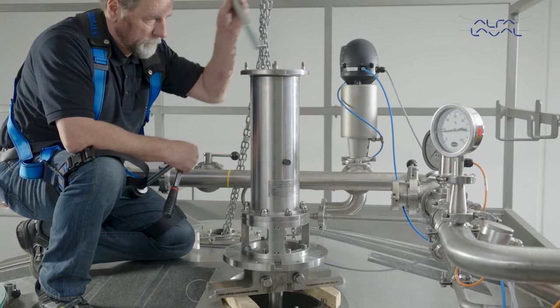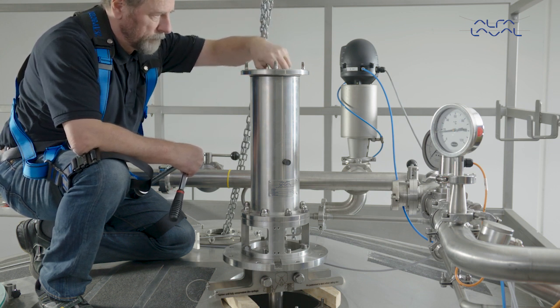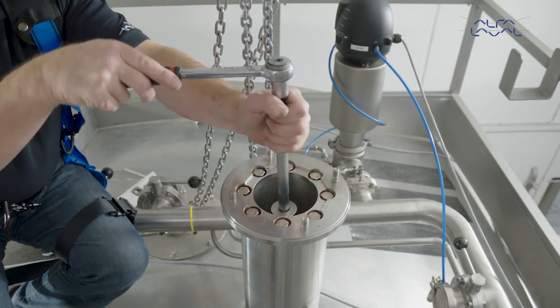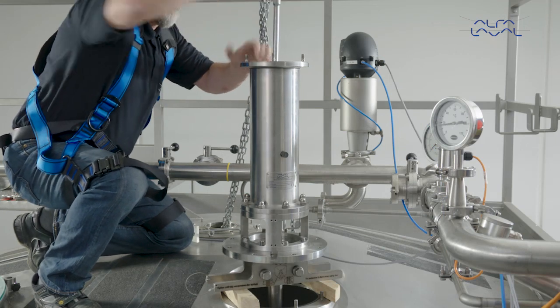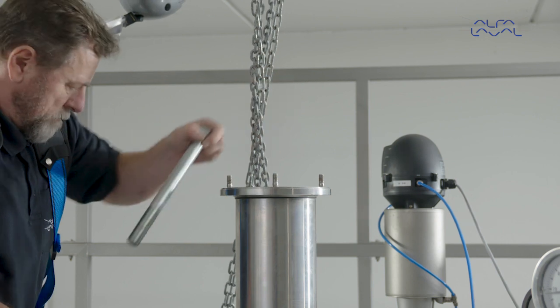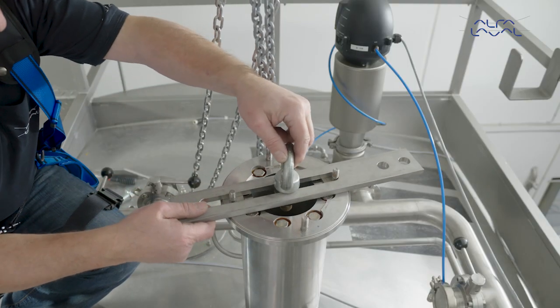Mount the shaft dismantling bolt to loosen the shaft from the bearing frame. Remove the shaft dismantling bolt. Secure the lifting plate across the bearing frame.